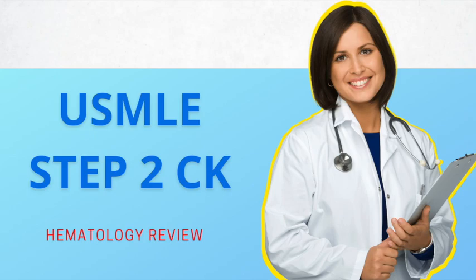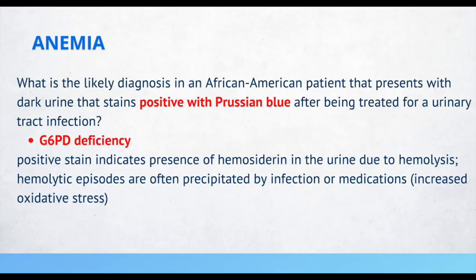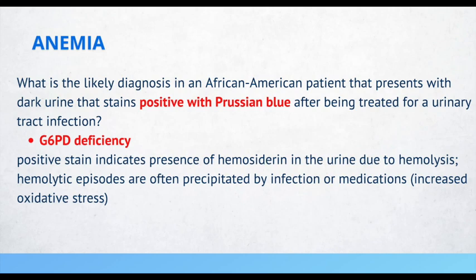Let's take a closer look at anemia. What is the likely diagnosis in an African-American patient that presents with dark urine that stains positive after being treated for urinary tract infection? G6PD deficiency. This condition is common in African-American patients and is associated with medications such as antibiotics like trimethoprim. The positive stain indicates the presence of hemosiderin in the urine due to hemolysis.